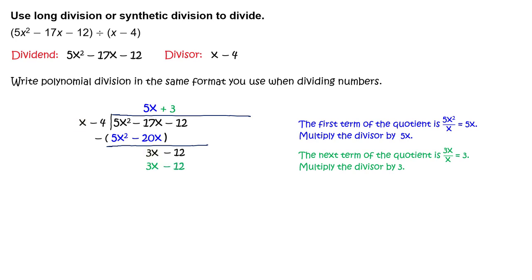Multiply the divisor by 3 to get 3x minus 12. Subtract to get 0. The quotient is 5x plus 3 and the remainder is 0.